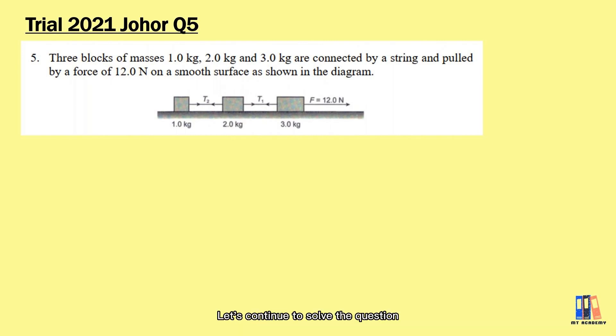Let's continue to solve the question. You can straight away apply the second method mentioned just now, where we ignore the tension first to obtain the acceleration of the overall system. Here we only have the 12 newton force pulling to the right, so substitute in the formula F = ma, we can calculate the acceleration equals 2 m/s².